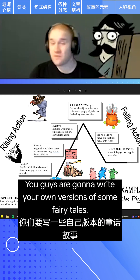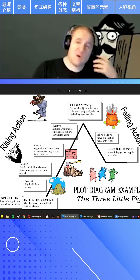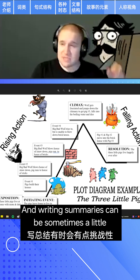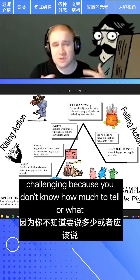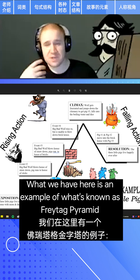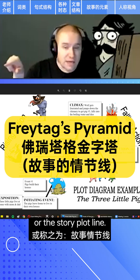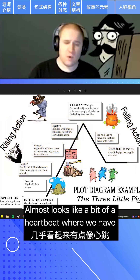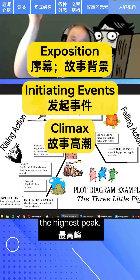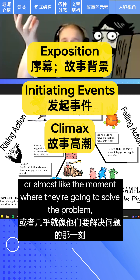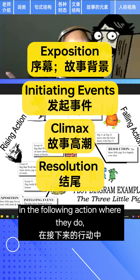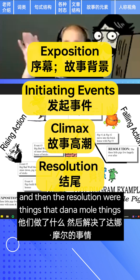So Oliver gave us a good little summary of the Three Little Pigs. We'll take a look at some fairy tales — you're going to write your own versions. What Oliver gave us was a summary, and writing summaries can sometimes be a little challenging because you don't know how much to tell. What we have here is an example of what's known as Freytag's Pyramid or the story plot line — it almost looks like a heartbeat: the start of the story, everything that happens, the highest peak, the moment of crisis, the falling action where they solve the problem, and then the denouement where things finish.